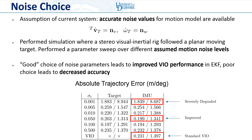To do so, we performed a simulation where a stereo visual-inertial rig performed target tracking of a moving planar target. Although all trajectories used were the same, we performed a parameter sweep over different assumed motion model noise levels utilized by the filter during target propagation. We can see that, compared to VIO alone — which does not leverage target information — incorporating the target estimates into our filter while using proper noise values for the target's motion leads to improved performance of the IMU estimates and also leads to very accurate target estimates.